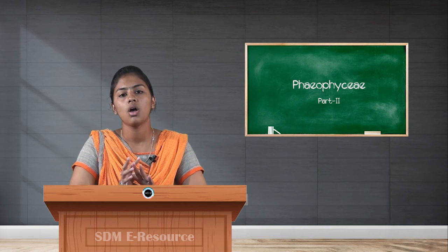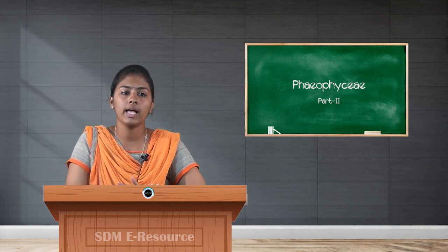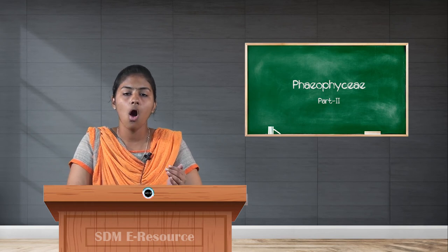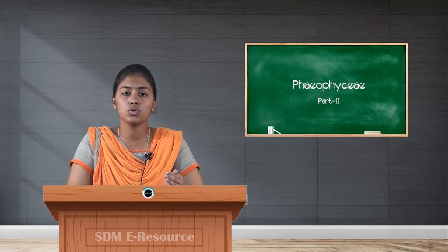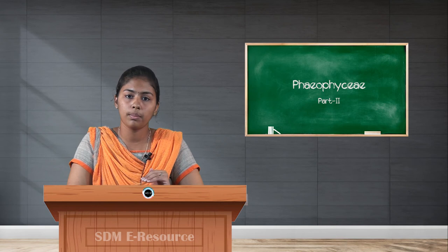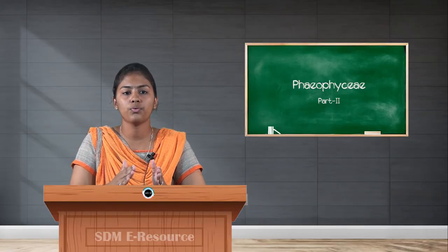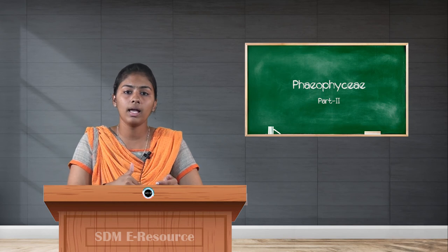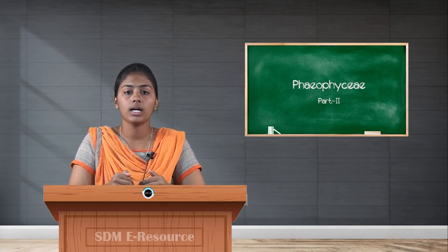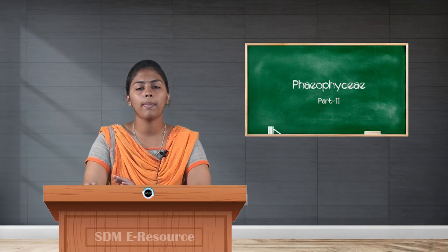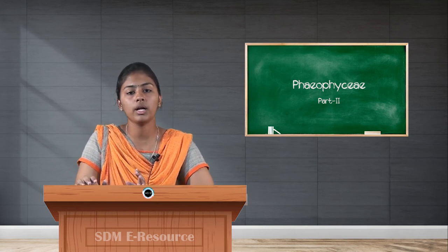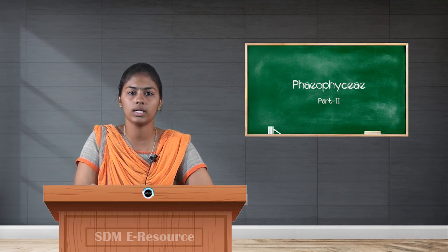Fertilization of the antheridia and oogonia may take place in the external environment or inside the thallus itself. The internal fusion — that is, fusion of the antheridium and oogonium inside the female thallus — is called in-situ fertilization. In some cases, fertilization is external where the male and female gametes are released into the water. Occasionally, parthenogenesis can also be seen, which is the development of the thallus from the oogonium itself without fertilization.